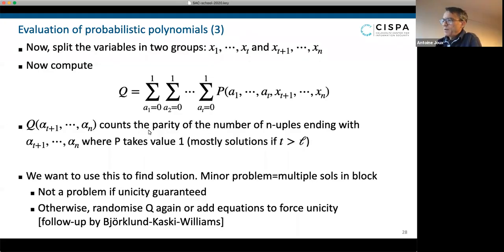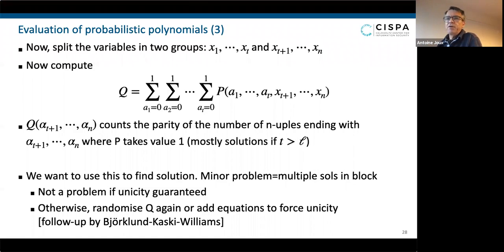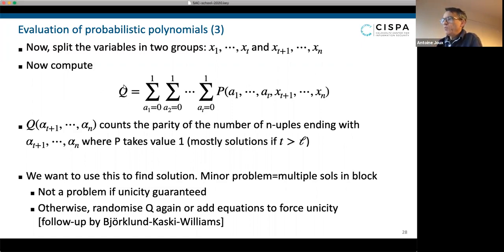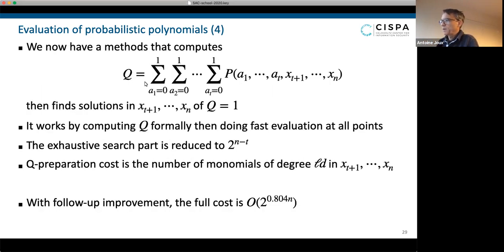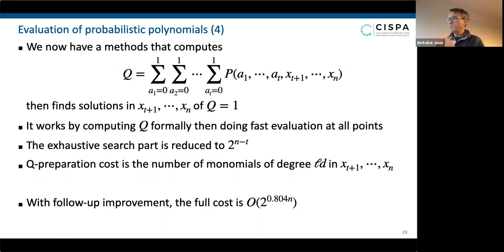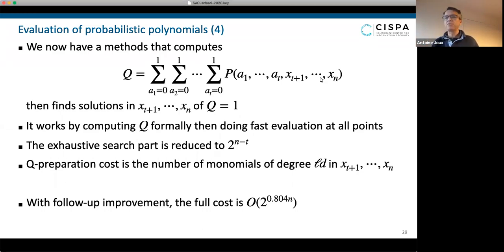So why is this evaluation of probabilistic polynomial a good idea? Why can we do something here that is going to be more efficient? The thing is that we split the computation in two parts. First we are going to compute the polynomial q formally, and once we have done that we are just going to do exhaustive search on the remaining n minus t variables.